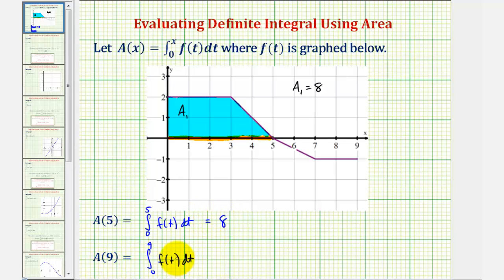Next, we have the integral of f(t) from zero to nine. So now we'll consider the area bounded by the function and the x-axis over the interval from zero all the way to positive nine, which means now we also have to consider this area here that's below the x-axis.